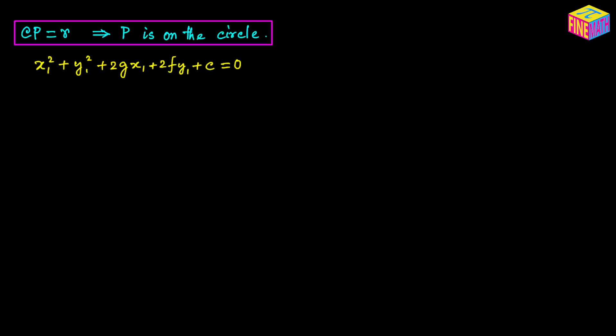The derivation is exactly the same — the only difference is using equals instead of greater than. So x₁² + y₁² + 2gx₁ + 2fy₁ + c = 0 is the necessary condition for point P to lie on the circle.